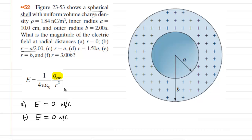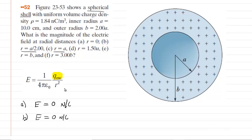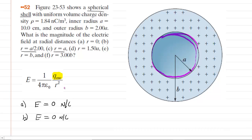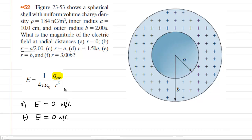We go on to part C, and this time the radius is equal to A. If you draw a spherical Gaussian surface at this location, you will see that there is zero enclosed charge within that spherical Gaussian surface. So once again, the electric field is going to equal zero newtons per coulomb at that radius.